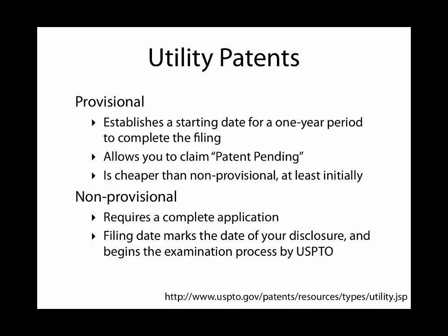Let's talk about utility patents. There are two types: provisional and non-provisional. A provisional patent allows you one year to complete the full filing, while a non-provisional patent application is the complete filing. If you have an idea and want to start producing something based on it — and you want the invention protected by intellectual property, meaning you want to prevent other people from manufacturing and selling that product, device, or material — a provisional patent gives you a one-year window to complete the full patent application. You don't have a patent number yet, but you can write 'patent pending.'